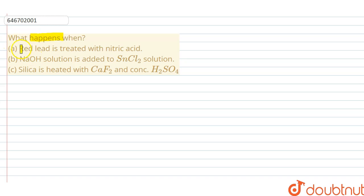Red lead is treated with nitric acid, NaOH solution is added to SnCl2 solution, silica is heated with CaF2 and concentrated H2SO4. So here we have to write down three reactions.